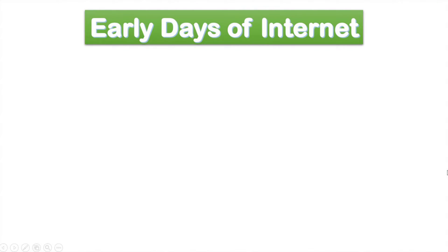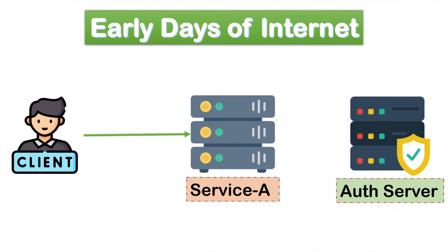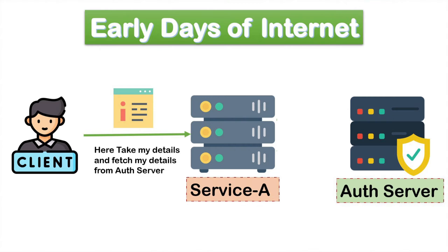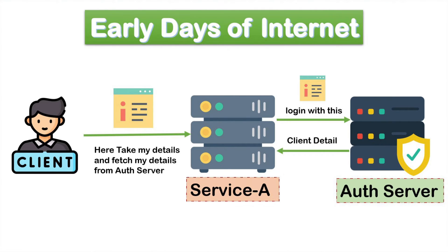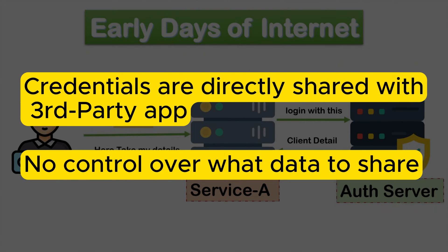In the early days of the internet, sharing information between services was simple but risky. Suppose you want to use the services of a website, let's name it service A, but you do not want to create an account there. Instead, you want to use your already created account in another service, let's name that service B. Service B holds your details such as name and email ID, which is required for service A. So you provide your credentials of service B to service A, and service A will directly log into service B using your credentials and access your information.